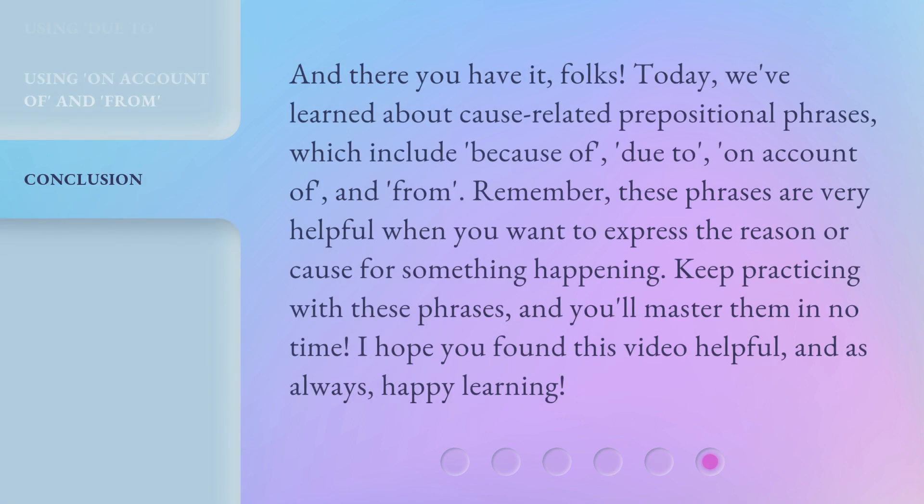And there you have it, folks. Today we've learned about cause-related prepositional phrases, which include 'because of,' 'due to,' 'on account of,' and 'from.' Remember, these phrases are very helpful when you want to express the reason or cause for something happening. Keep practicing with these phrases, and you'll master them in no time. I hope you found this video helpful, and as always, happy learning.